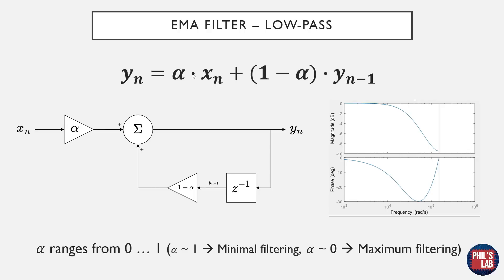This is all we need to implement an EMA filter. Alpha is a coefficient that ranges between 0 and 1. If alpha is 1, the last term disappears because (1 - 1) is 0, so y(n) equals x(n) — the output follows the input directly. For values of alpha close to 1, we get minimal filtering. At the opposite extreme, when alpha is 0, the first term drops to 0 and the output is very close to the previous output — maximum filtering. We only have one coefficient, alpha, which we vary from 0 to 1, giving us varying degrees of filtering.